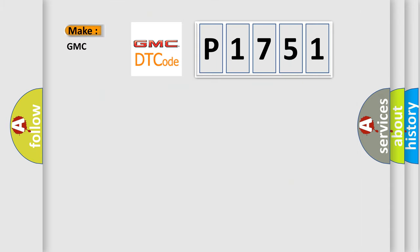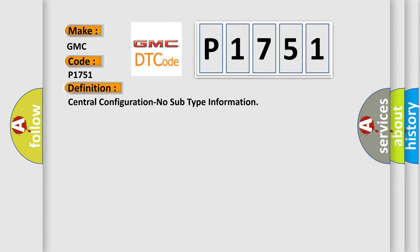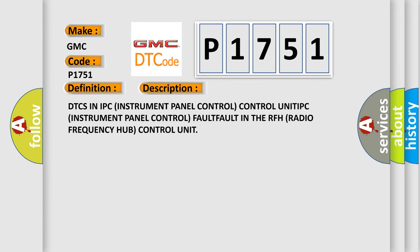So, what does the diagnostic trouble code P1751 interpret specifically for GMC car manufacturers? The basic definition is central configuration, no subtype information. And now this is a short description of this DTC code: DTCs in IPC instrument panel control control unit, IPC instrument panel control fault, fault in the RFH radio frequency hub control unit.